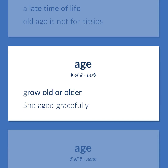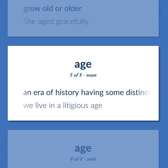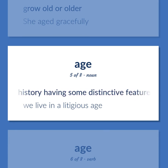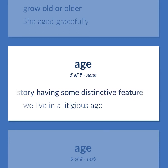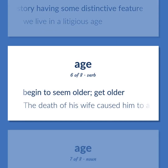Grow old or older. Example: She aged gracefully. An era of history having some distinctive feature. Example: We live in a litigious age. Begin to seem older; get older. Example: The death of his wife caused him to age fast.